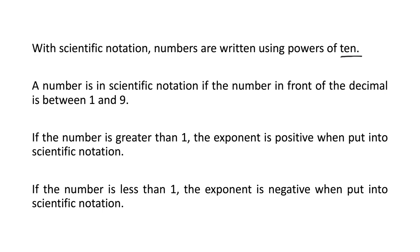A number is in scientific notation if the number in front of the decimal is between 1 and 9. So for example, if I have 1.8 times 10 to the third, that's in scientific notation because it's 1.8. If I had 18.0 times 10 to the third, that is not in scientific notation because the number in front of the decimal is not between 1 and 9. It's actually 18.